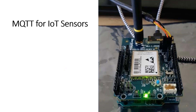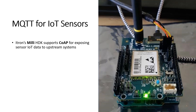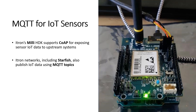ITRON's Millie module for low-power IoT devices connects sensors to our network infrastructure. Millie typically supports COAP, or the Constrained Application Protocol, for exposing sensor data to upstream systems. ITRON networks, including the Starfish Developer Network, also support publishing IoT data using MQTT topics.